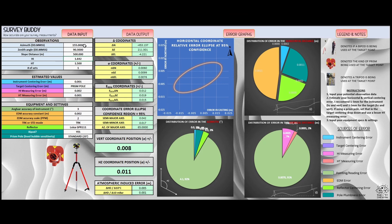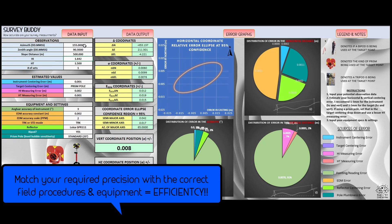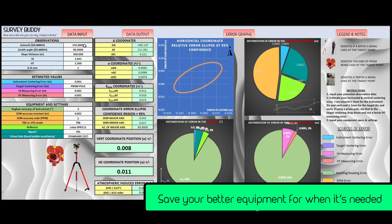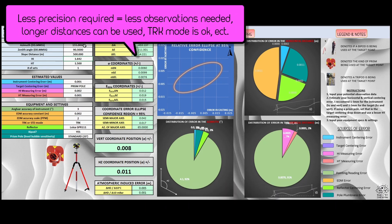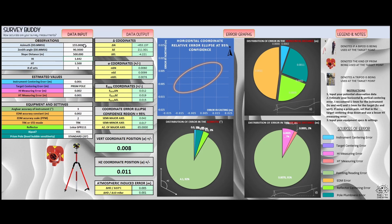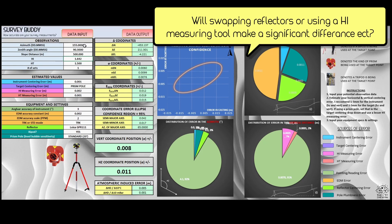Another example would be setting up a monitoring scheme. If we want to detect a centimeter of movement or if we wanted to detect a few mils of movement, we're going to treat those two situations differently. We're going to need different equipment and different field procedures. Also, this program is going to tell us how to maximize and get the best precision we can from the equipment we have.